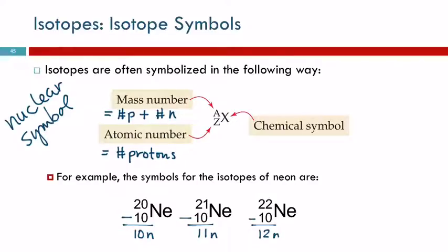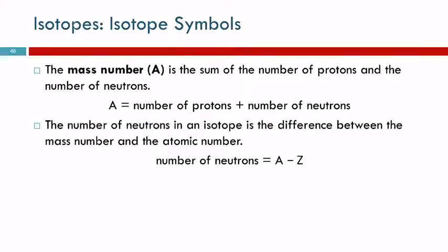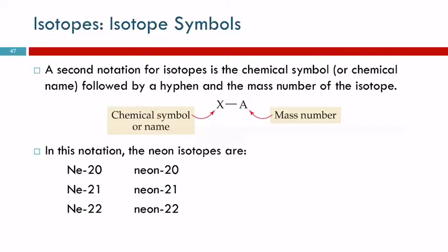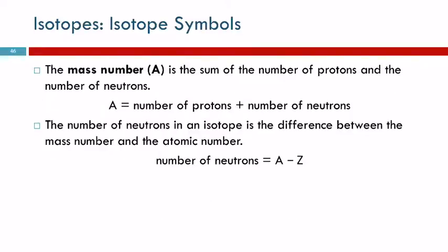That's one way to indicate the isotope. So, the mass number is the sum of the number of protons and the number of neutrons. To figure out the number of neutrons, you just subtract.